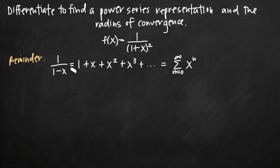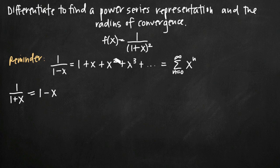So we're going to replace x with negative x everywhere. The left-hand side sum becomes 1 over 1 plus x. For the terms: replacing x with negative x gives 1 minus x; then negative x times negative x gives positive x squared; then we get minus x cubed. We can see an alternating pattern — positive, negative, positive, negative — so the sequence has become an alternating series, plus dot dot dot.